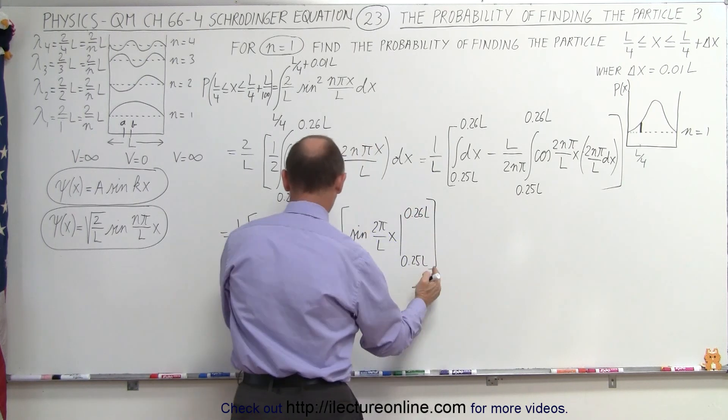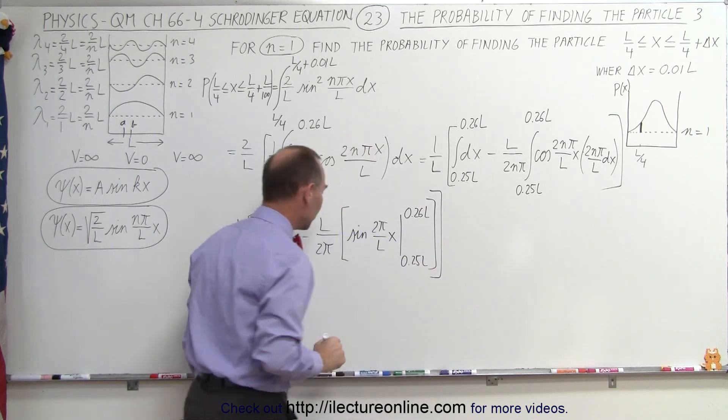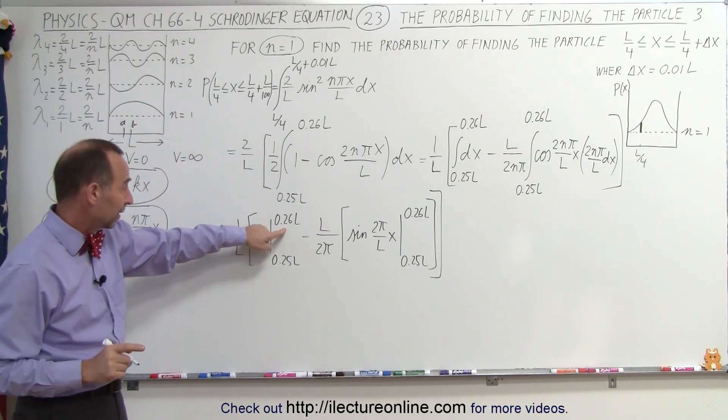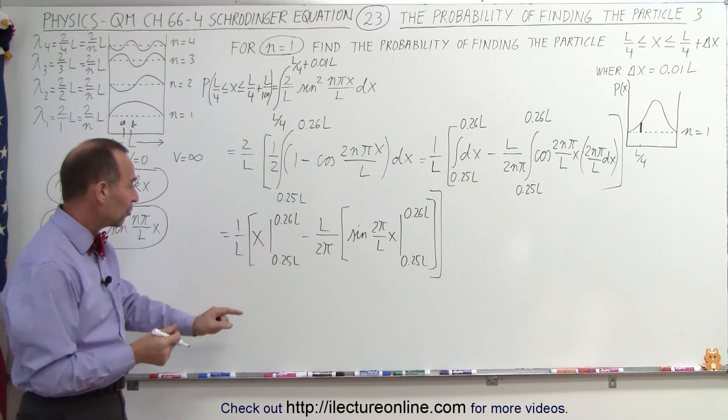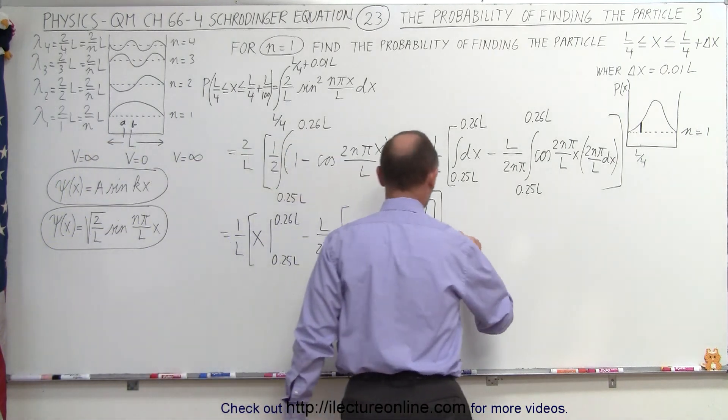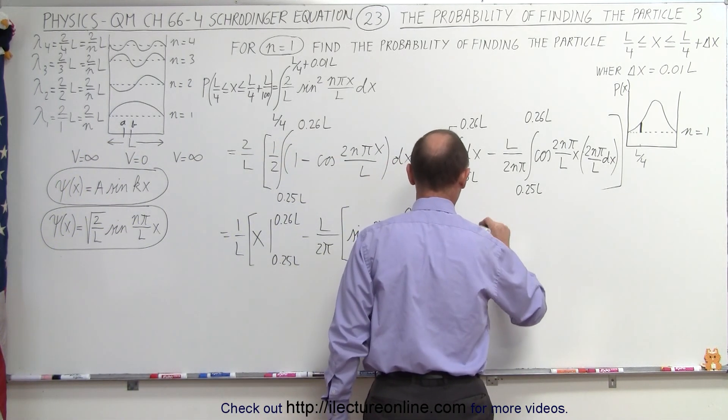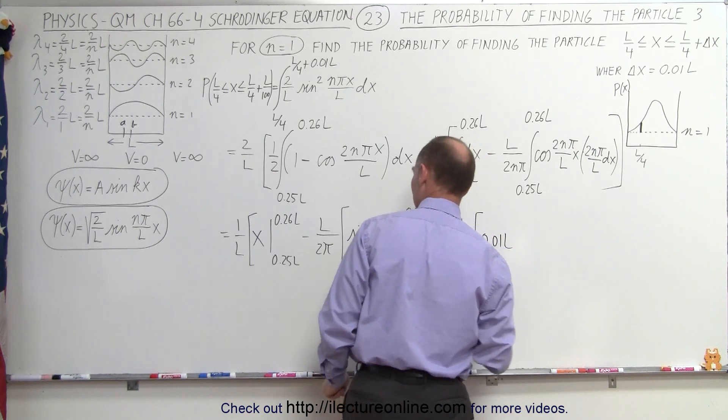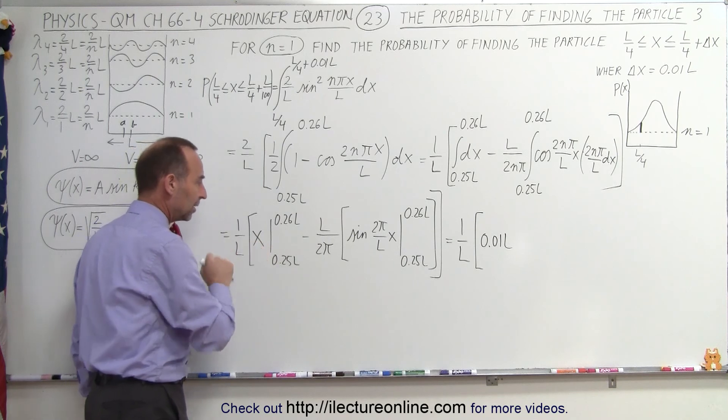Let's see. Do I have a closing bracket here and a closing bracket there? So here, notice when we plug in the limits, the upper limit, we get this. Lower limit, we get that. When we subtract, we simply get 1 over 100L. So this is equal to 1 over L times 0.01L. That would be when we plug in the limits, the upper and lower limit here.